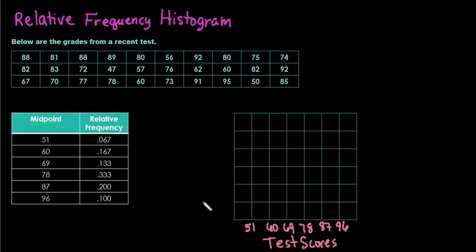But for the relative frequency, instead of having just the counts, we have the proportion or the percentage that fall in each category. So we would label this as relative frequency. You could also label it as the proportion or the percent.